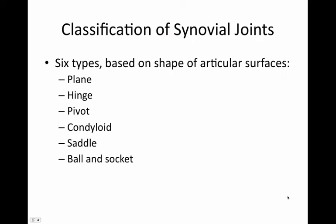The classification of synovial joints. There are six types based on the shape of articular surfaces: the plane, the hinge, the pivot, the condyloid, the saddle, and the ball and socket. We're going to take a look at each one of these.